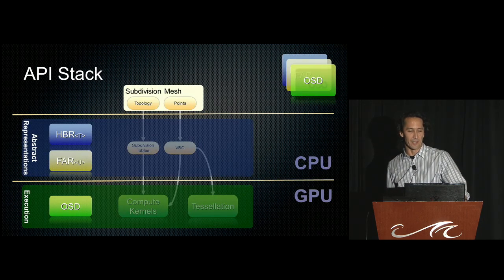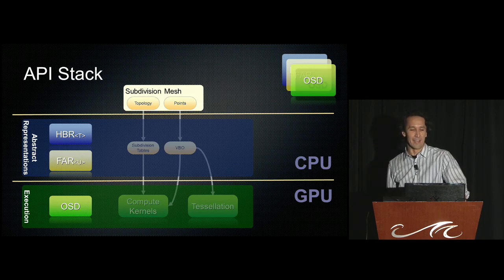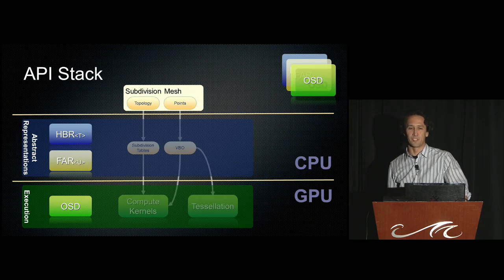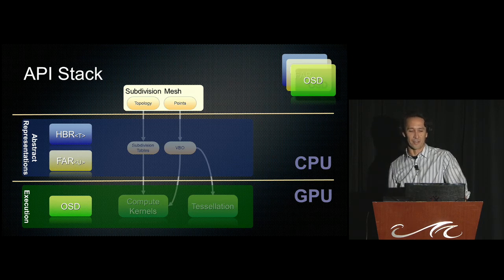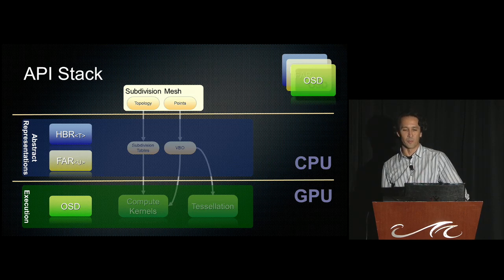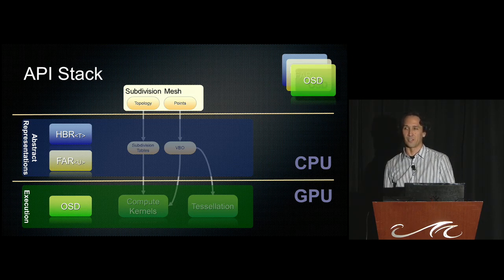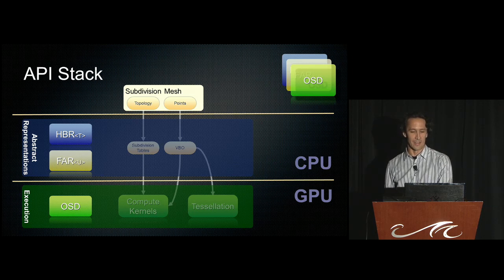At the heart of OpenSubdiv is our geometry representation — the in-core representation of the subdivision surface used for refinement and analysis. Our geometry representation is actually two pieces, identified as HBR and FAR. This two-part design provides flexibility so client code can use only the parts that make sense for their use case and only pay the runtime costs for parts they're actually using.